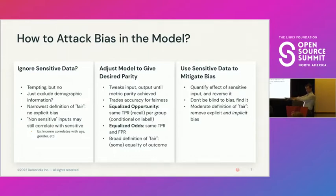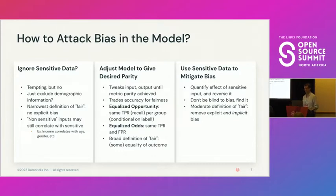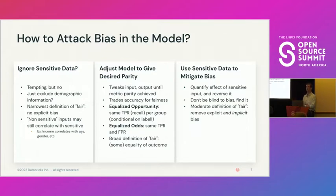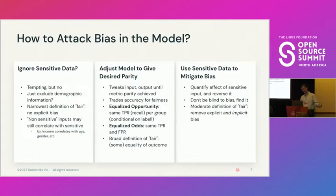Equalized odds is a pretty aggressive definition of fair — it says I don't care about the inputs or what the model was doing; I just care about the outputs, and one way or another I'm going to make sure the model's outputs are fair, even if it means trading off some accuracy. Maybe there's something in the middle: targeting the effects of sensitive features like age or race in your machine learning problem, isolating their effect, and then backing them out. If I could figure out how much effect your particular age had on the model's prediction, I could just subtract that out — which would more directly undo the effects of things that shouldn't influence the model.